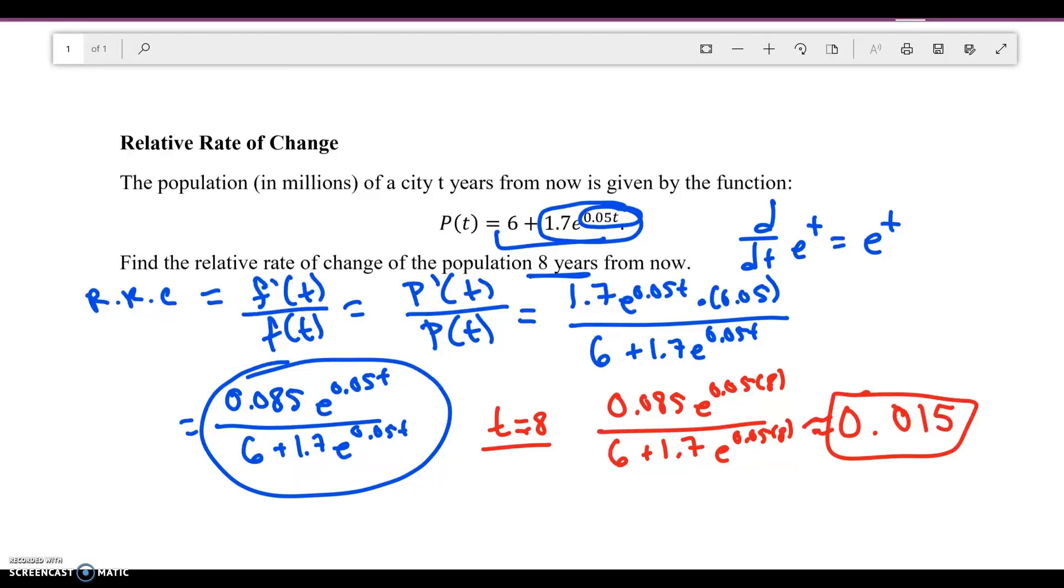If I wanted this in a percentage, I would just multiply this by 100 and the relative rate of change is about 1.5%. That's all there is to relative rate of change. All you have to do is use a formula, plug in the numbers, take the derivative, and then plug in the value of t.